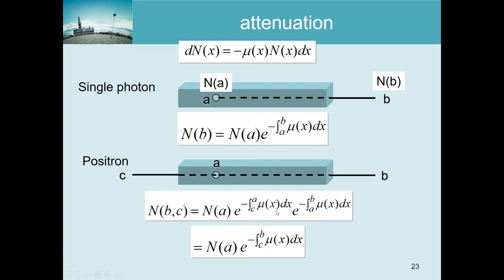For scatter simulations in PET there is current agreement that entanglement can be ignored because it changes results very little. Accepting that, the integral from C to A and from A to B combine into one integral from C to B - the total attenuation along the entire line of response. This means that moving the point source from left to right does not change the number of detected coincidences: if the source moves toward detector B, that detector sees more photons, but detector C sees fewer, and the combined probability stays exactly the same.